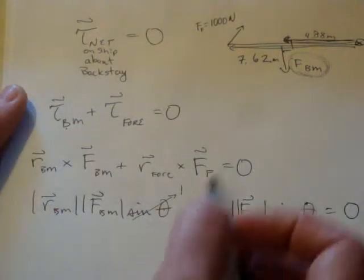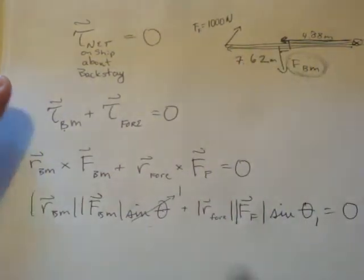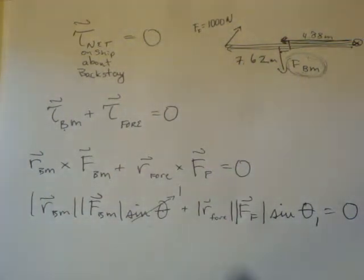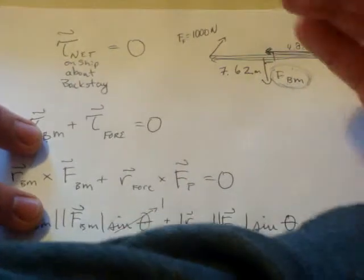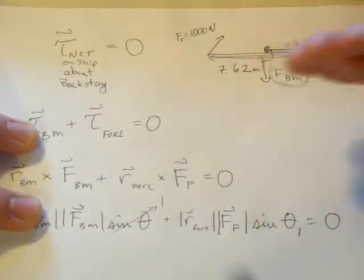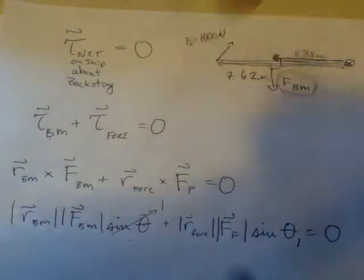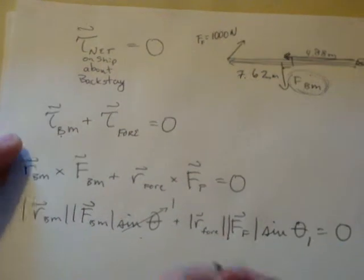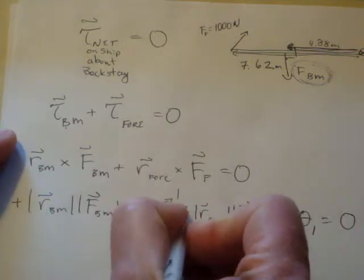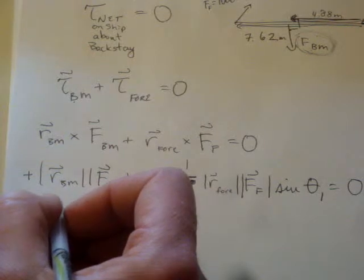I need to be more careful. We need to do our right-hand rule to make sure we know which directions these are going. For this force, we take R cross F - we get a torque out of the page. For this one, R cross F goes into the page. Torques counterclockwise, out of the page, we usually count as positive. So we'll count this as positive and put a negative sign here. They're going in opposite directions, so we need to subtract them.